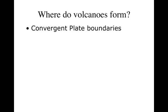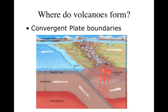Volcanoes also can form at convergent plate boundaries. When we have a convergent boundary, one plate gets pushed down and subducted under the other. When that happens, the subducted plate is being recycled back into the magma — literally being melted — and oftentimes some of that magma will come back up to the surface and create volcanoes. This could be oceanic and continental, or when two oceanic plates meet, we get a volcanic island arc instead of volcanic mountains.